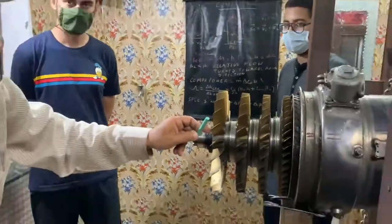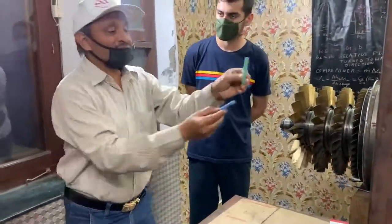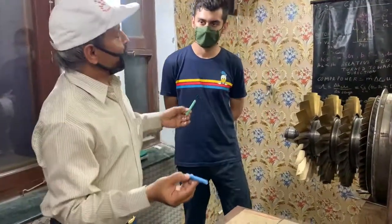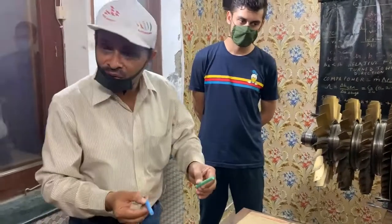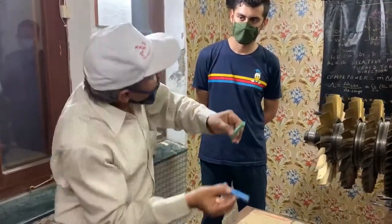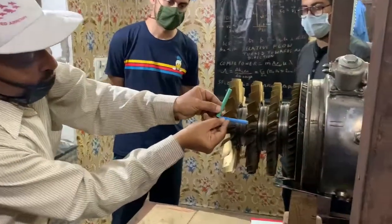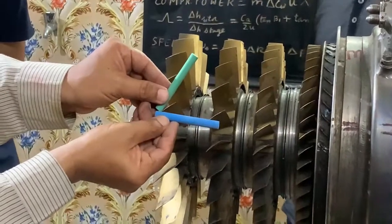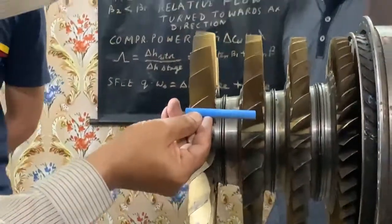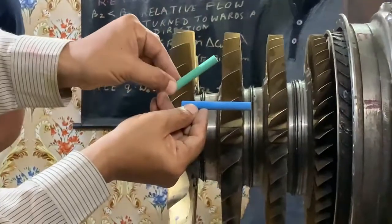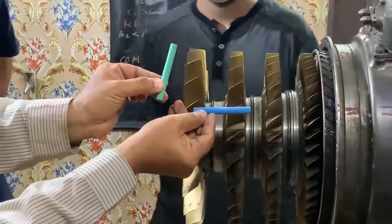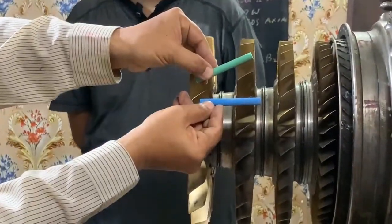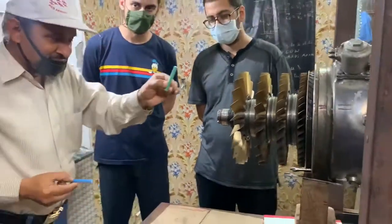The rotor blades have turned the relative flow towards the axial direction. In a turbine, the opposite happens — the relative flow is changed away from the axial direction. In the compressor, the flow enters at a larger angle but leaves at a smaller angle, meaning the compressor blade has turned the flow towards the axial direction.